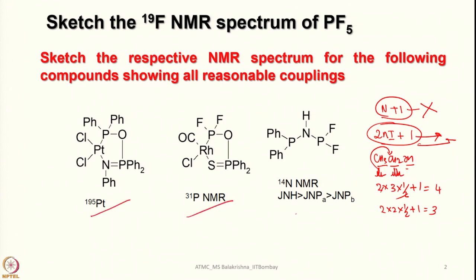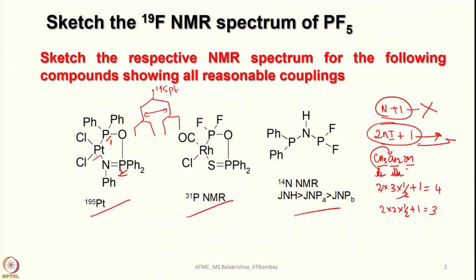Now we have this molecule, where both 31P and 195Pt are NMR active. When the question is asked about 195Pt NMR, you should not worry about abundance because we are looking into the NMR nuclei themselves. In this case, we can see that platinum is one bond apart from P1 and two bonds apart from P2. First it will be split into a doublet by P1, and then each line will be further split into a doublet by P2. This coupling represents 1J(Pt-P1) and this one represents 2J(Pt-P2).